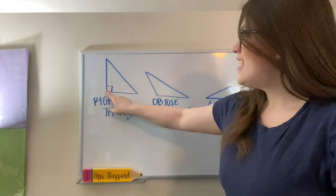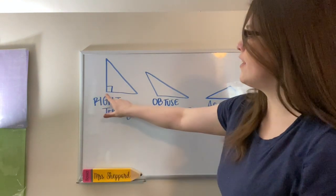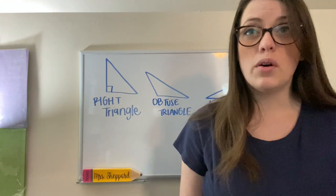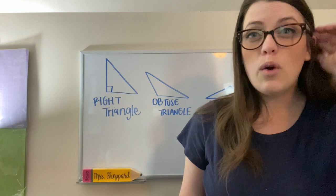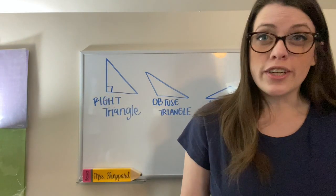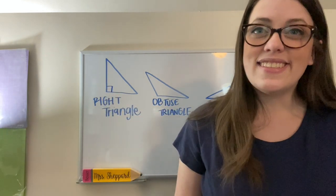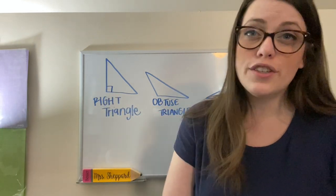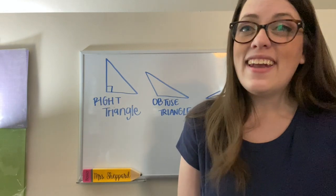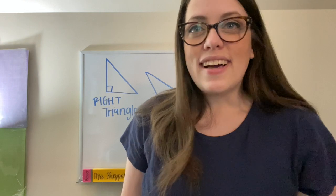Remember this box right here tells us that this angle is a right angle. That way we can tell without having to measure that this angle is 90 degrees. So when you see the box, it means that that is definitely a right angle. You don't have to guess. Now, angles are not the only way that we classify triangles.